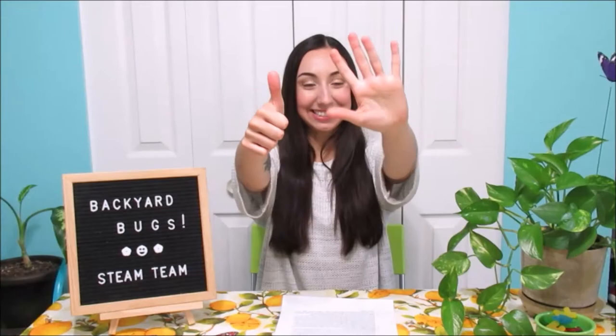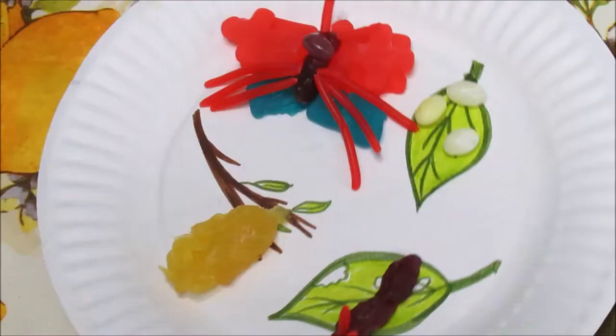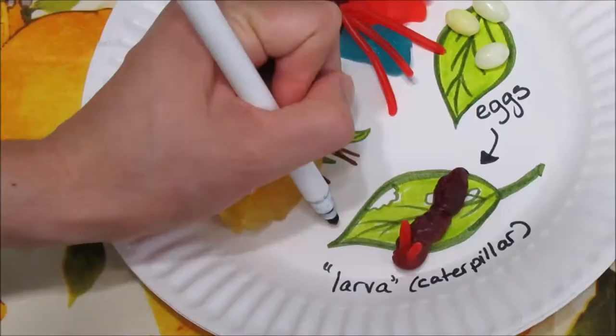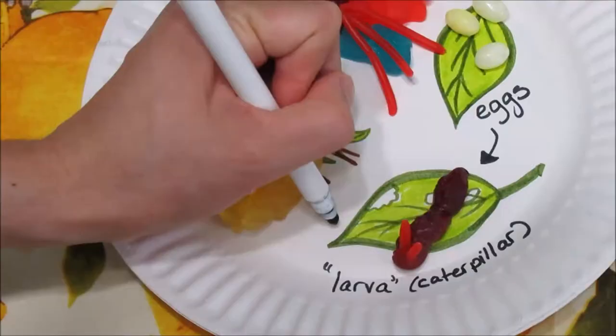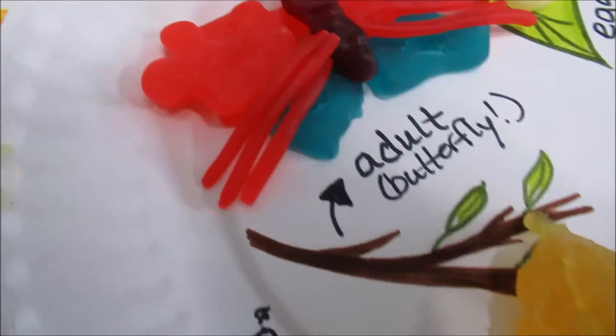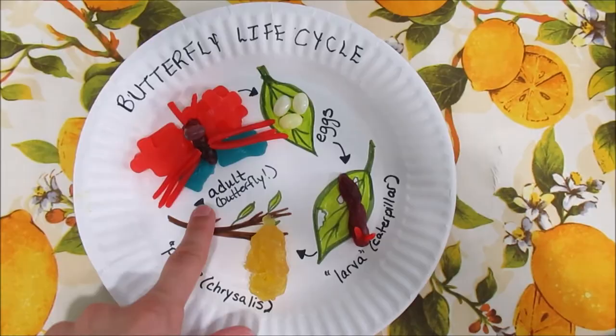And finally, step six. Starting with phase one — the egg phase — go back to each model you have created on your paper plate and label them with a marker or pen: eggs, larvae, pupae, and adult. So now you know the four stages of the butterfly life cycle, and you got to make them yourself.